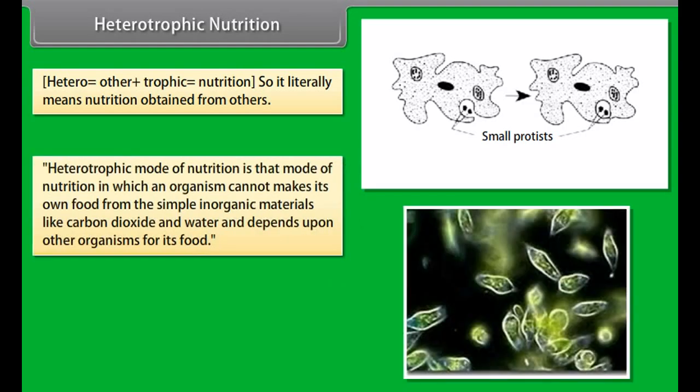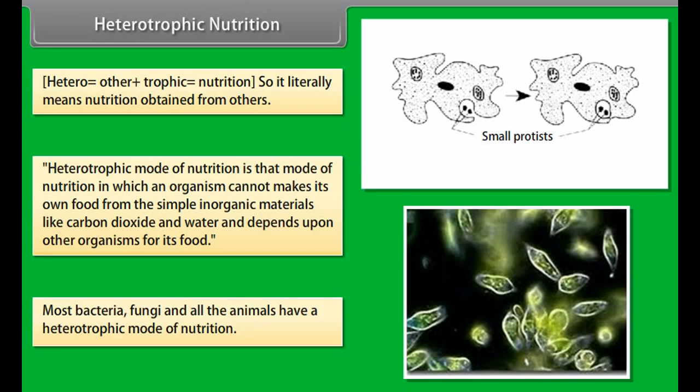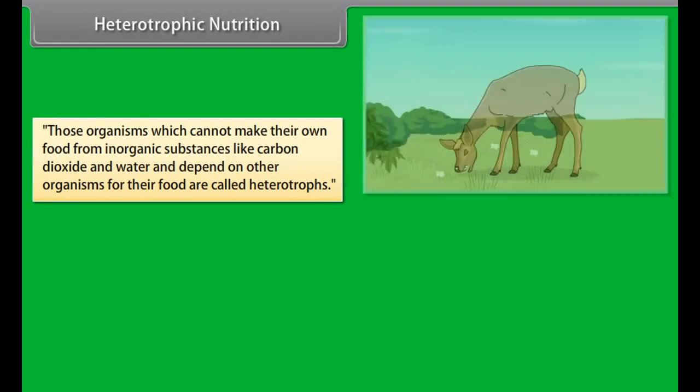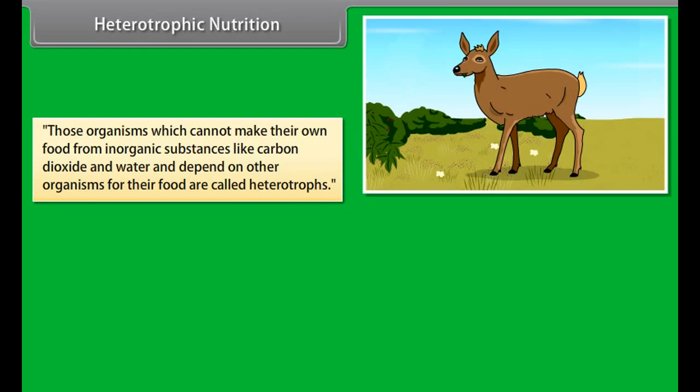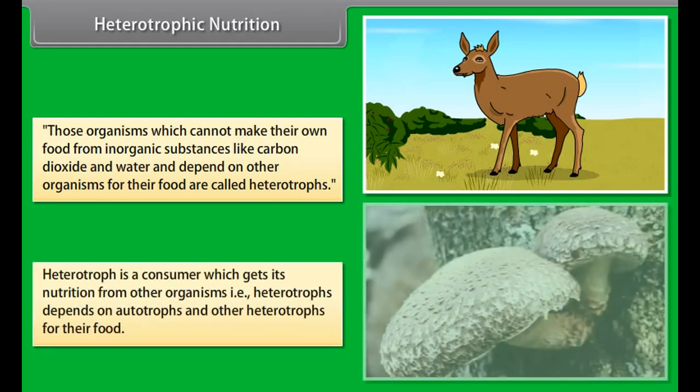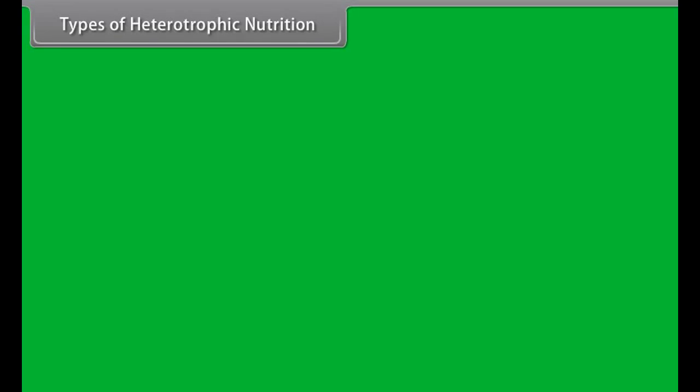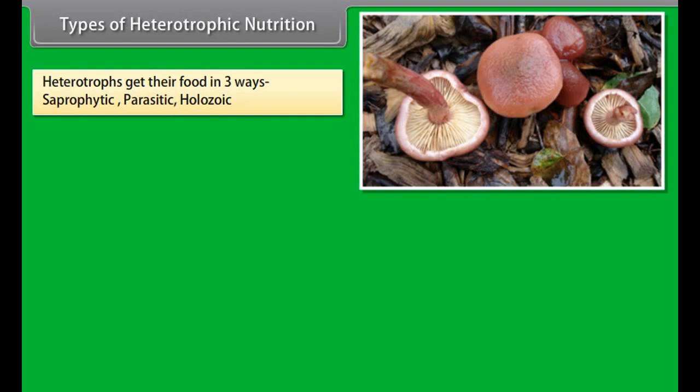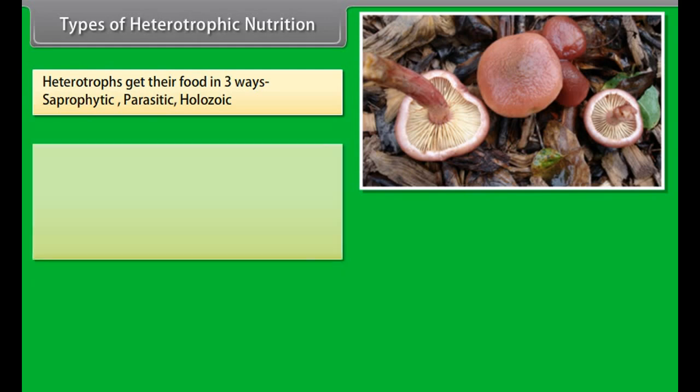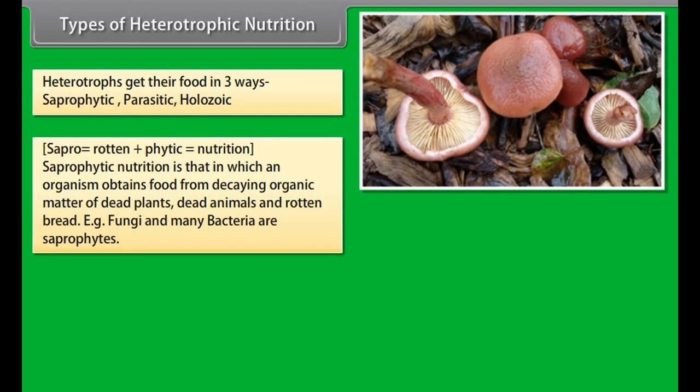Heterotrophic nutrition: hetero means other, so it literally means nutrition obtained from others. Heterotrophic mode of nutrition is that mode of nutrition in which organism cannot make its own food from simple inorganic materials like carbon dioxide and water and depends upon other organisms for its food. Most bacteria, fungi and all the animals have a heterotrophic mode of nutrition. Those organisms which cannot make their own food from inorganic substances like carbon dioxide and water and depend on other organisms for their food are called heterotrophs. Heterotroph is a consumer which gets its nutrition from other organisms, that is, heterotrophs depend on autotrophs and other heterotrophs for their food.